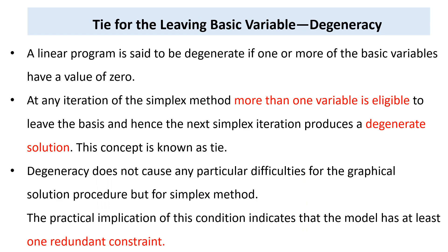A linear program is said to be degenerate if one or more of the basic variables have a value of zero. As discussed in lesson 5, basic variables normally have a non-zero value while non-basic variables have a value of zero. But in this special case, a linear program is degenerate when one or more basic variables have a value of zero, which is opposite to the usual condition.